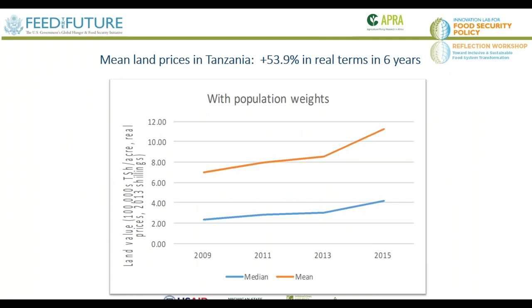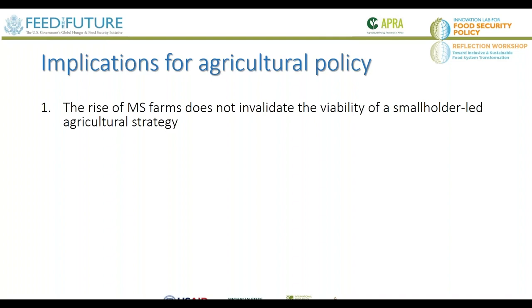Land prices are also rising rapidly. In Tanzania there's a 55% increase in real inflation-adjusted terms in median and mean land prices over just six years. This is especially pronounced in places with good market access — disaggregating by distance to urban areas shows not much increase in remote areas but a major increase in favorable areas. Medium-scale farms are therefore going to come in a bit farther out where land prices are not as high.